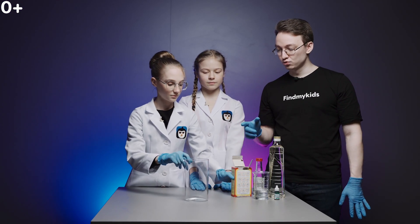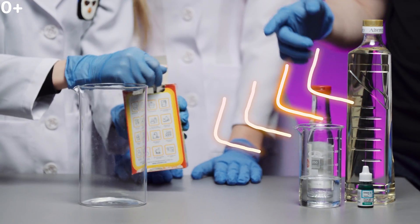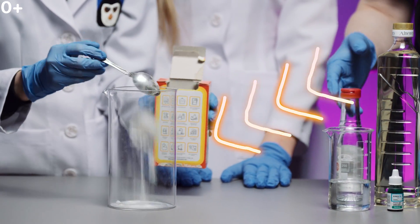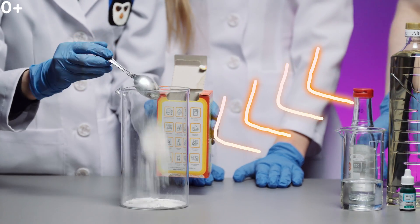Pour soda into the bottom of the glass. Cover the bottom with a layer of soda, about 0.5 cm or 0.25 inches.